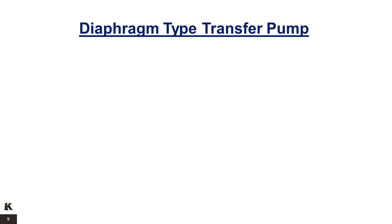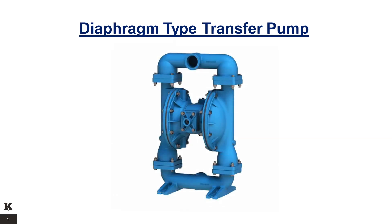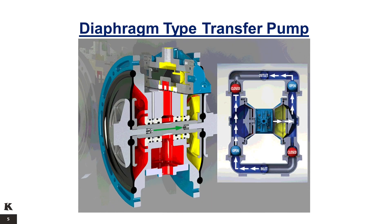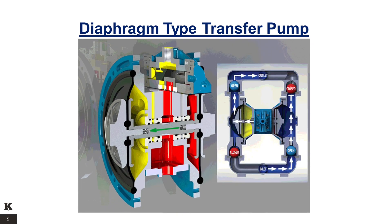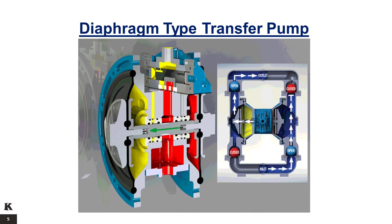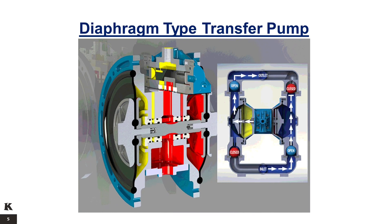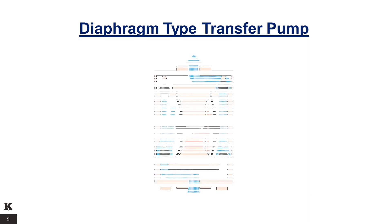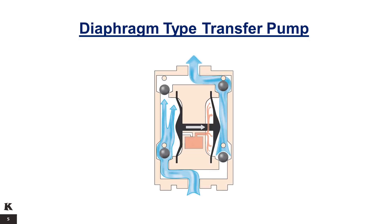Diaphragm type transfer pump. A diaphragm pump is a type of positive displacement pump that uses a combination of the reciprocating action of a rubber or Teflon diaphragm and suitable non-return check valves to pump a liquid. Sometimes this type of pump is also called a membrane pump. A double diaphragm pump, or an air-operated diaphragm pump, uses compressed air as a power source.